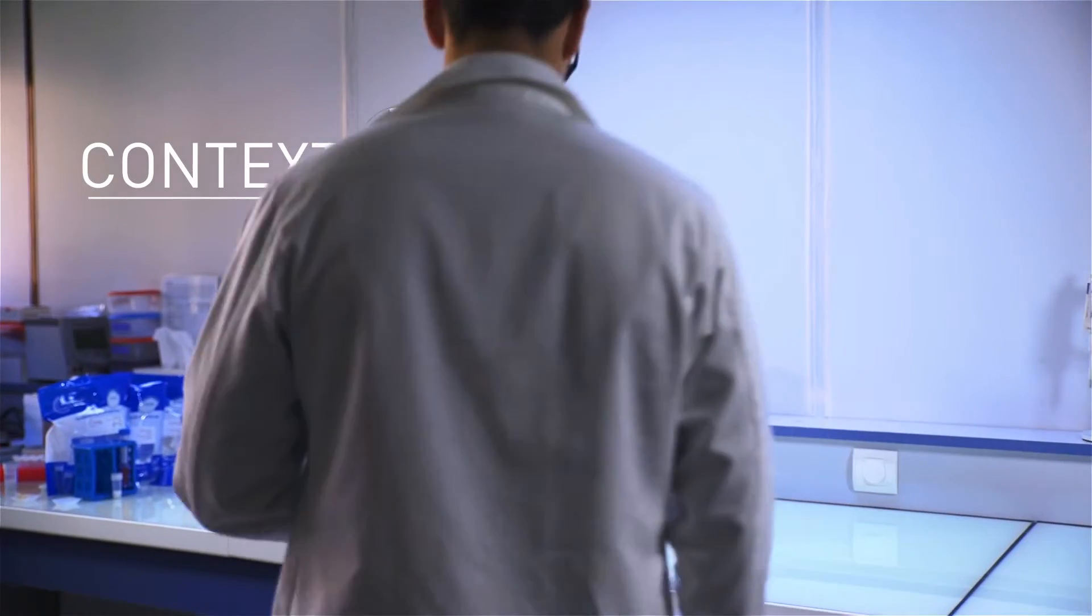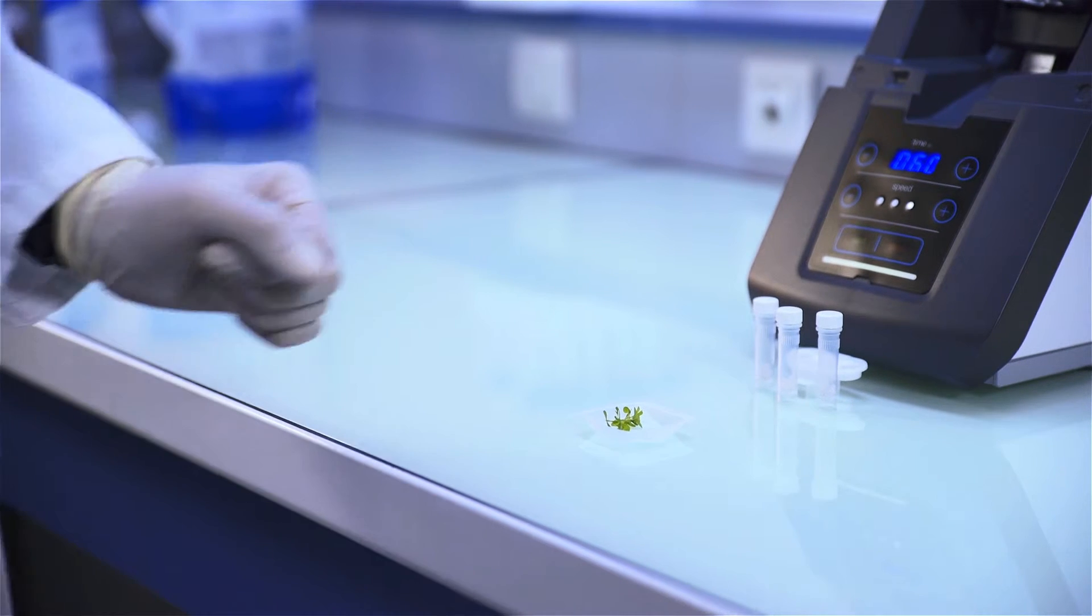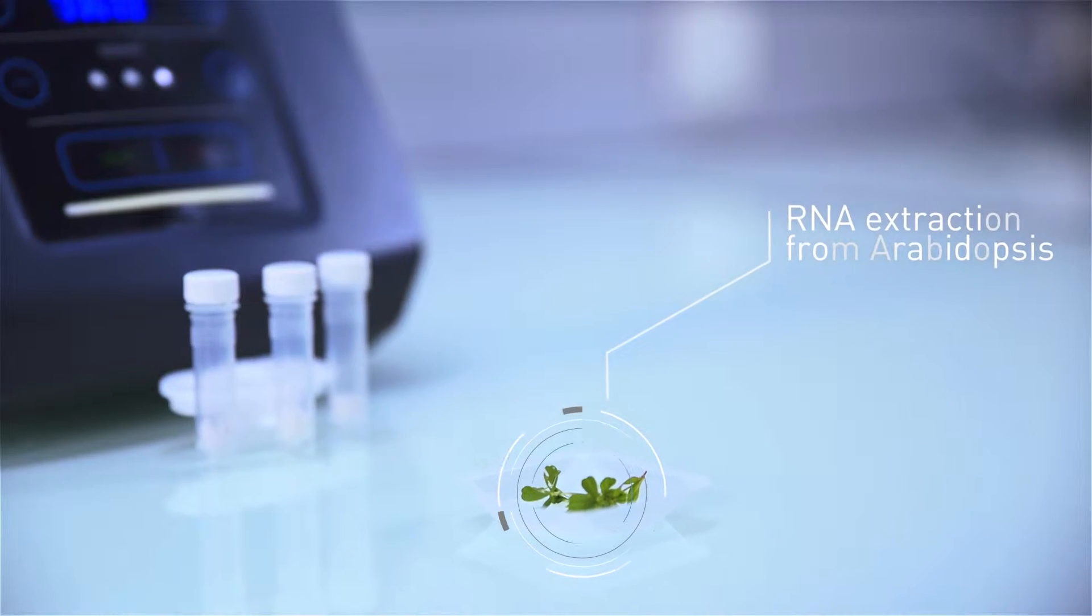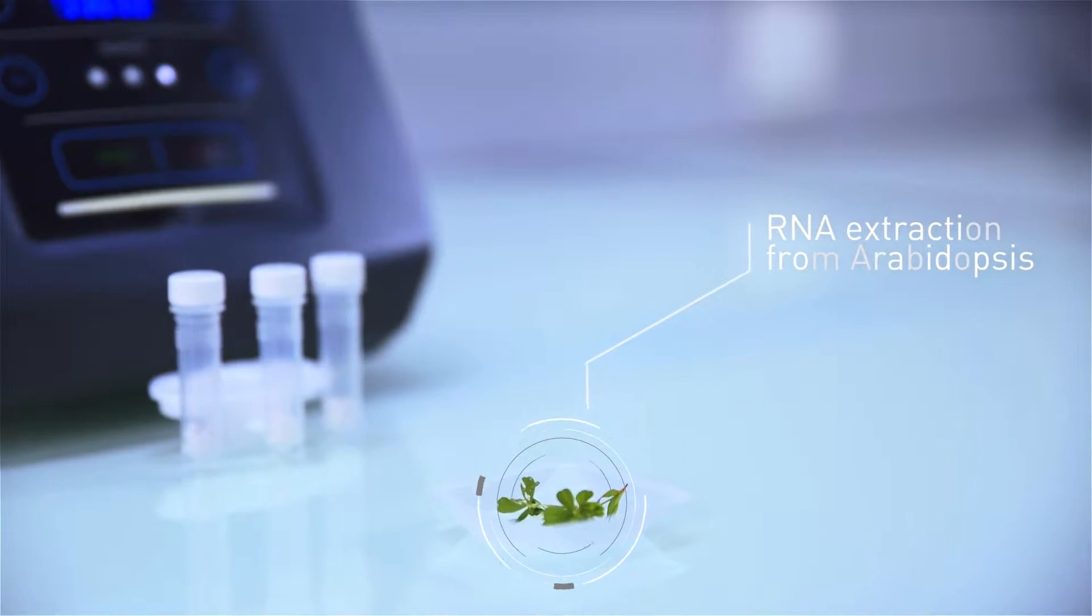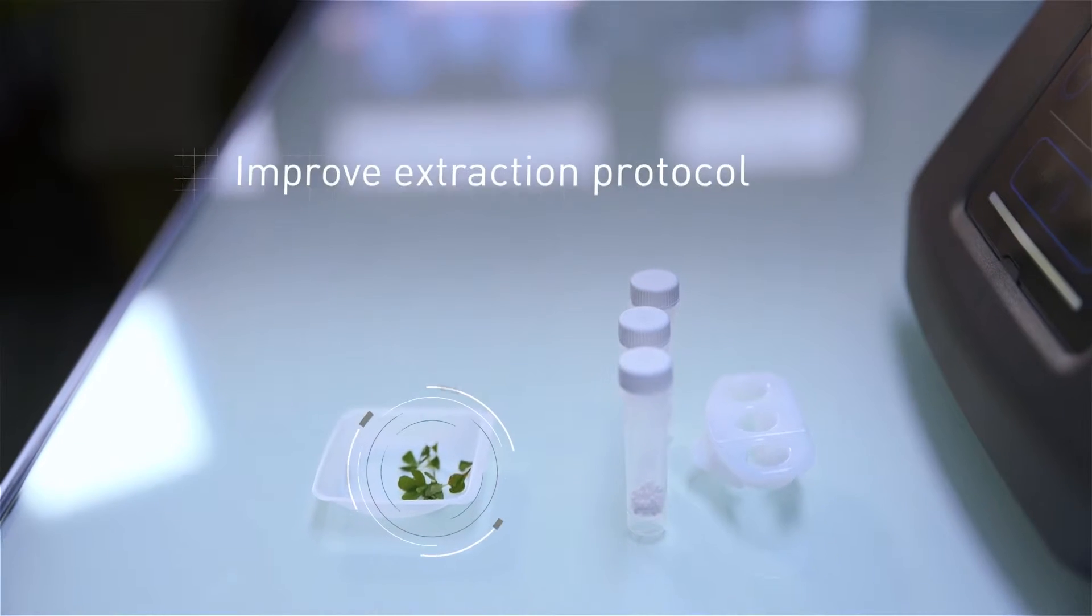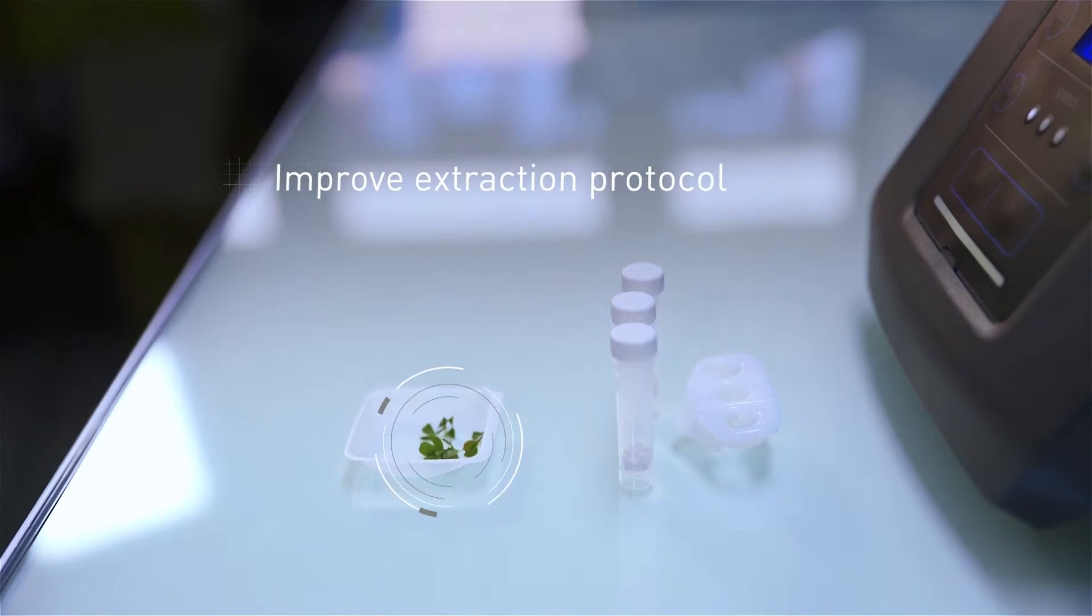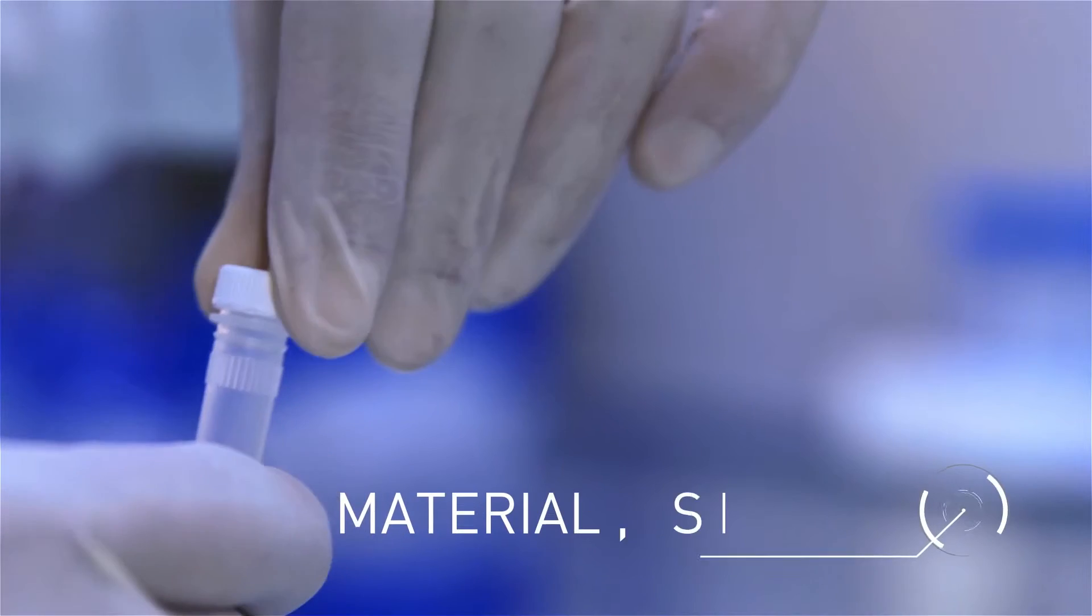Using Arabidopsis seedlings as a model, the aim is to extract high quality and quantity of RNA for further analysis using the mini list as an alternative to the current manual method of grinding with mortar and pestle.